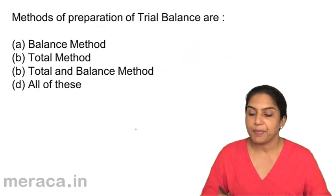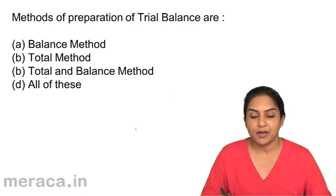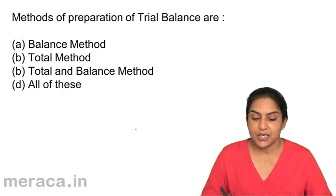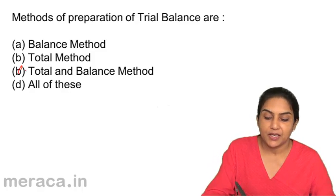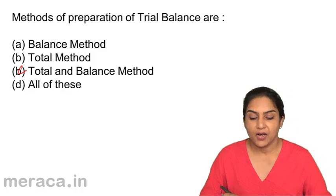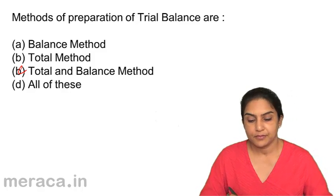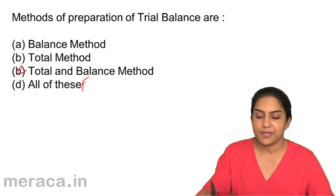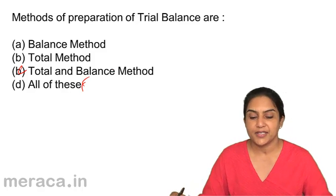Question 15: Methods of preparation of trial balance are — A: balance method, B: total method, C: total and balance method, D: all of these. We have three methods — balance method, total method, and total and balance method. So the correct answer is D, all of these.